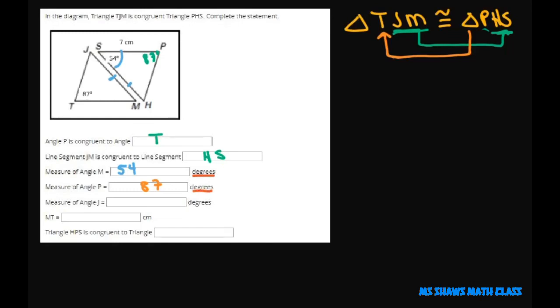J is going to be, so S goes with M, so this is 54 degrees. So we need to know the measure of angle J. All you do is take 180 minus 54 minus 87.